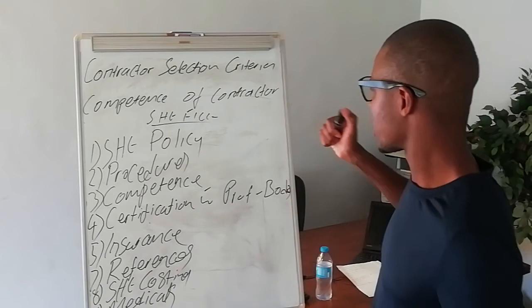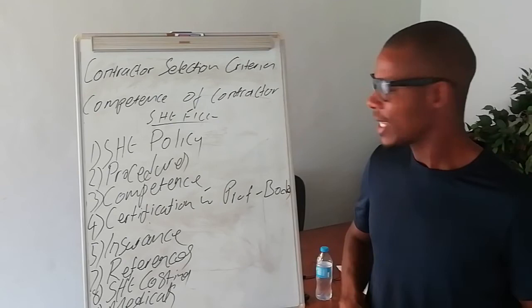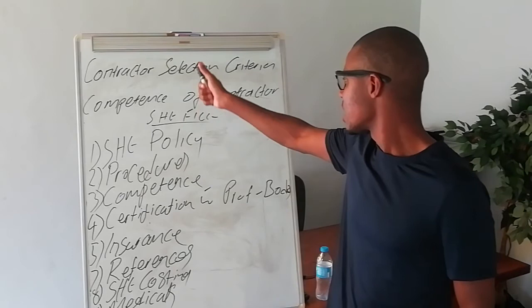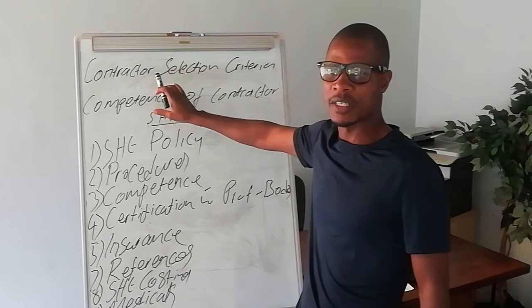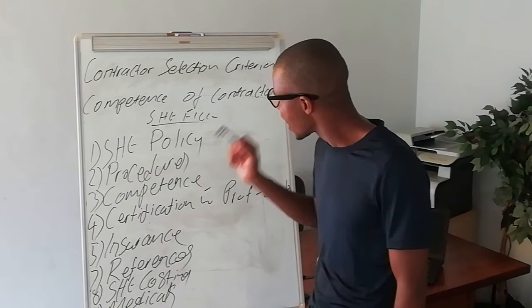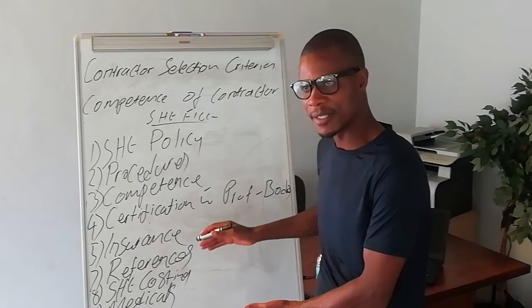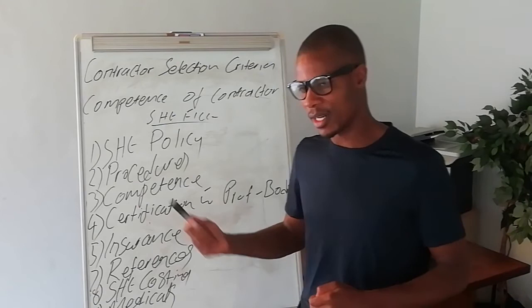So these are some of the requirements of contractor selection criteria or competence of the contractor. In short, if you are able to develop a safety file, then you should be able to articulate the contractor selection criteria as well as the competence of a contractor. Remember, contractor selection criteria and competence of a contractor are actually one and the same thing — the only difference is that they are found in two different modules. But the secret is they are the same. If you are able to develop a SHE file, you are able to articulate both.